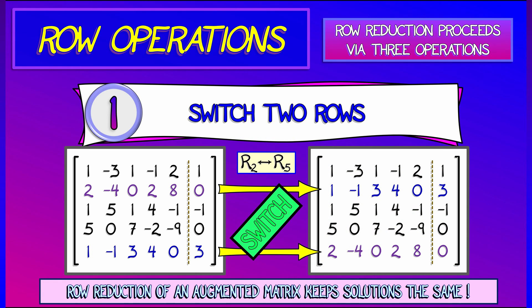So I have an augmented matrix and I switch two rows. I'm going to write that as R2 double-arrow R5, meaning you switch rows two and five. That keeps the solutions the same.